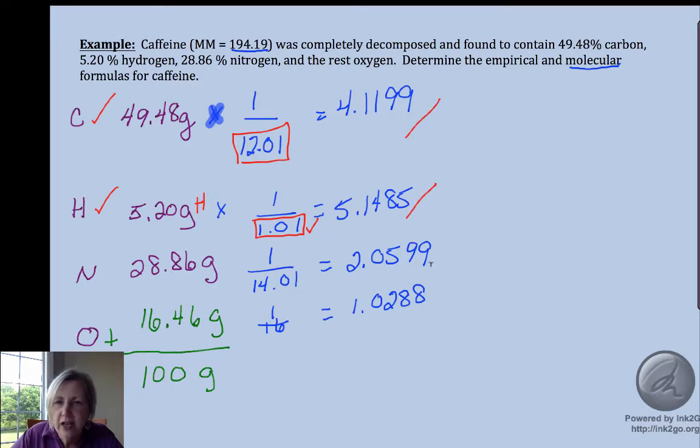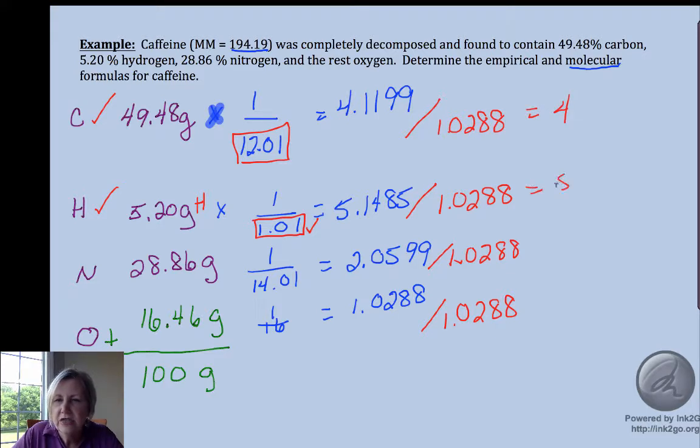All right, now I need to divide all of them by the smallest, which not surprisingly, it's very often, not always, but very often going to be oxygen when we have an organic compound. And this is 4, and this is 5, and this is 2, and 1. So we didn't have to do the multiply to a whole. We always have to do mass to moles, divide by the smallest. Sometimes you'll have to do the outer ends as well.